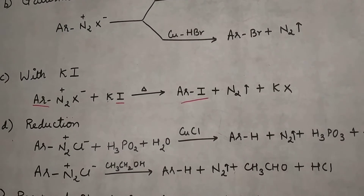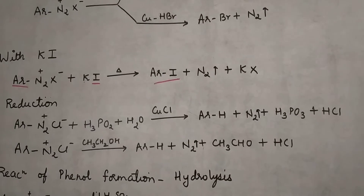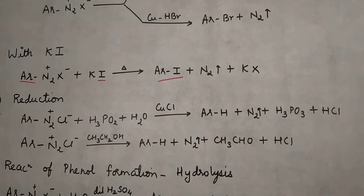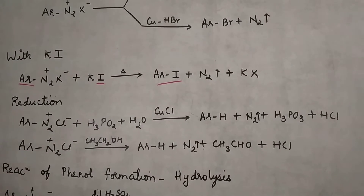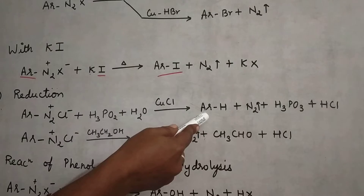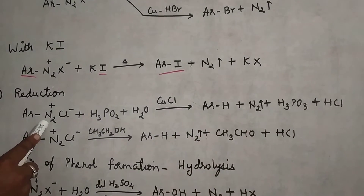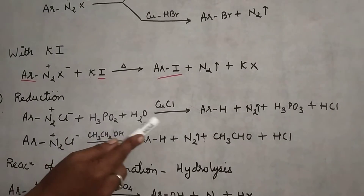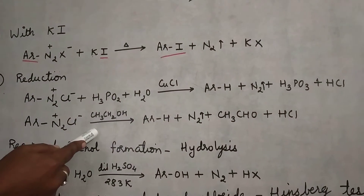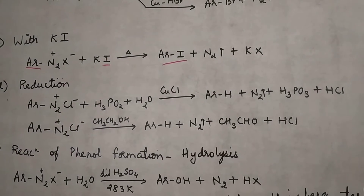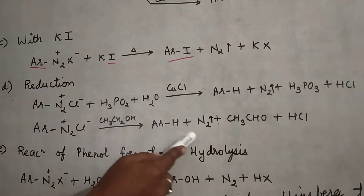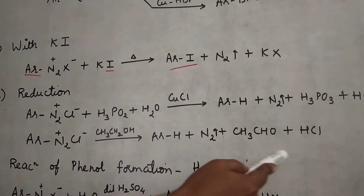Next is the reduction reaction. The arene diazonium salt is treated with phosphorous acid H3PO2 and H2 in the presence of copper chloride, giving ArH — that is, benzene. The aromatic ring with H is nothing but benzene, and nitrogen is liberated out along with H3PO3 and HCl as byproducts. Similarly, the same reaction can take place in the presence of ethyl alcohol instead of the acid and CuCl. The main product is still benzene along with nitrogen, but acetaldehyde and HCl are the byproducts.